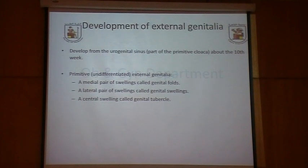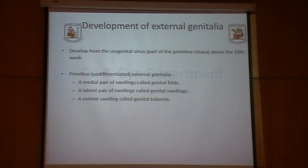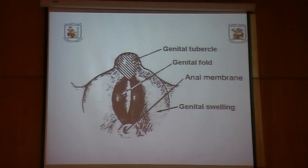Regarding external genitalia, in the absence of testosterone the full development is along female lines. The primitive undifferentiated external genitalia consists of a median pair of swellings known as genital folds, a lateral pair of swellings known as genital swellings, and the central swelling known as the genital tubercle — you can see these in the diagram with the genital tubercle in the middle, genital folds centrally, and genital swellings peripherally.